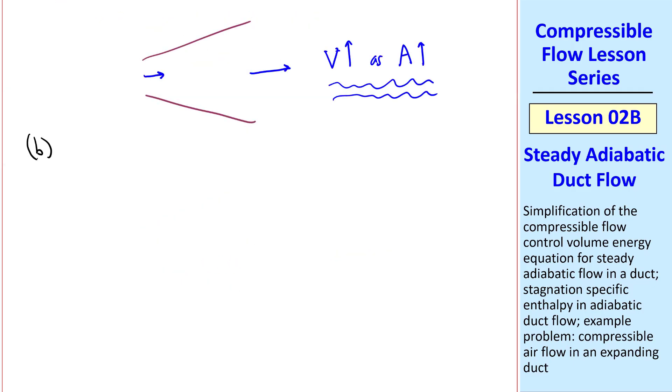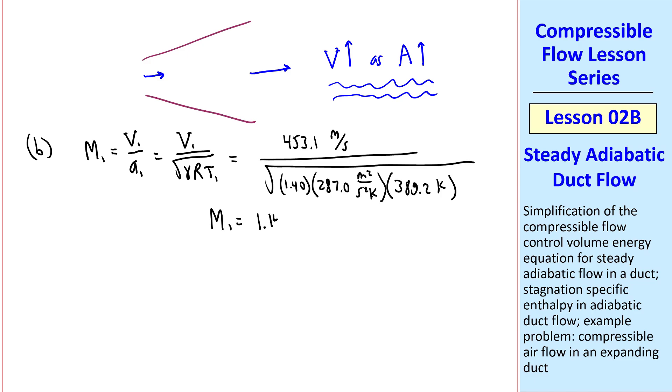Part B is to calculate M1 and M2, the Mach numbers, while M1 is just V1 over A1, which is V1 over square root of gamma RT1. And when I put in the numbers, we get M1 equal 1.146, which is supersonic.